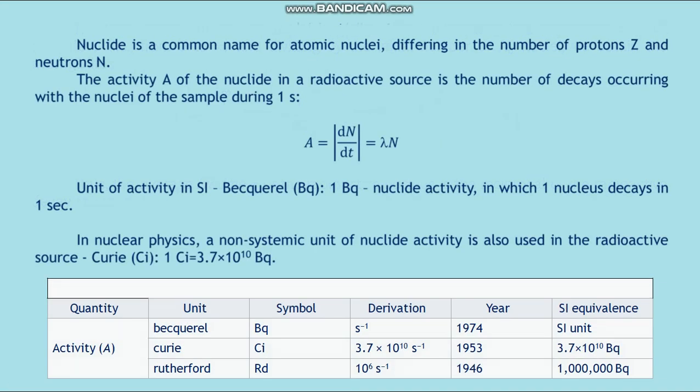Nuclide is a common name for atomic nuclei differing in the number of protons Z and neutrons N. The activity A of the nuclide in the radioactive source is the number of decays occurring with the nuclei of the sample during 1 second: A = dN/dt = λN.